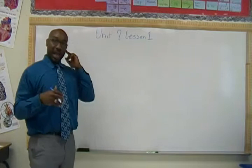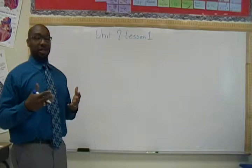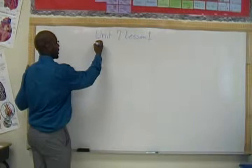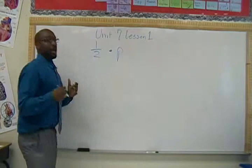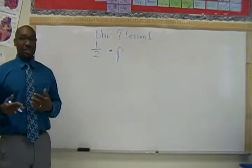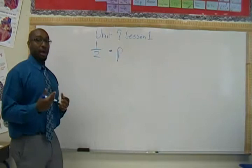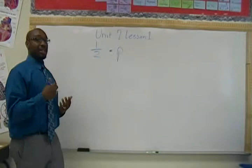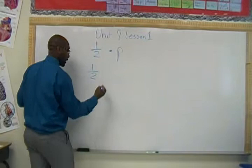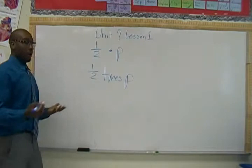Today's lesson focuses on how to write expressions in different ways. So let's say we have one and a half times p. They want you to write this in many different ways. For multiplication, you can use words such as 'times,' 'multiply,' or 'product.' You can still use the numbers and the variable, but instead of putting a dot or an x for multiplication, we use a word. So we can put 'one half times p.'